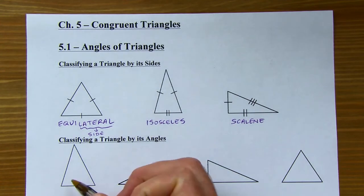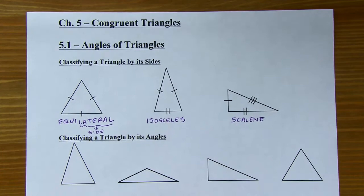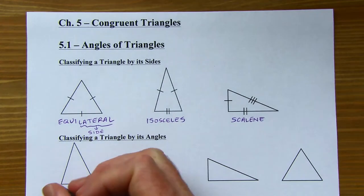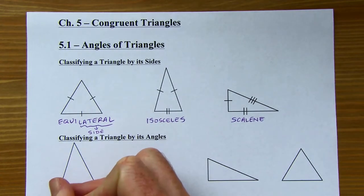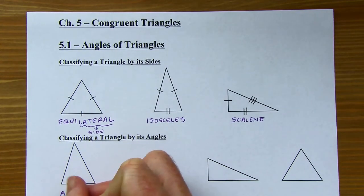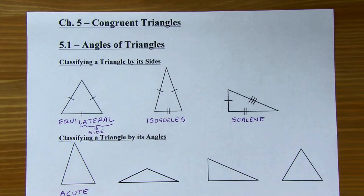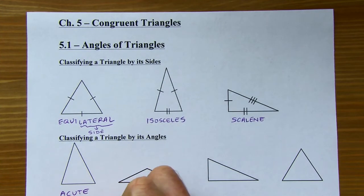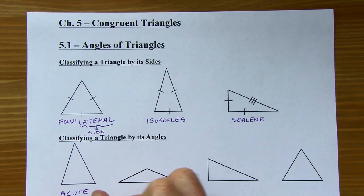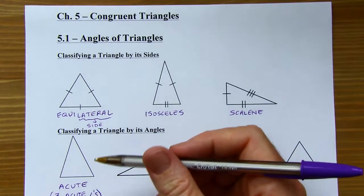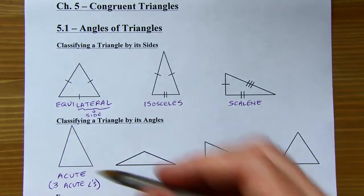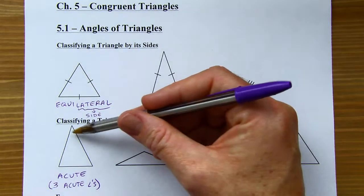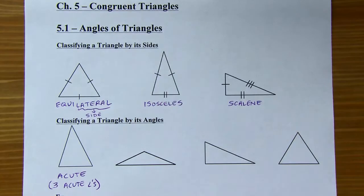This first triangle I've got drawn here is supposed to represent an acute triangle. That just means that all three angles are acute. We don't know the measures of these angles, but it's pretty clear they're all less than 90 degrees just looking at them.